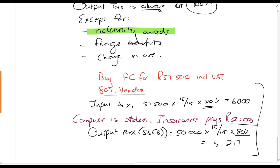So guys, you should have seen that this is a difference. Usually, remember, if we bought this computer and we claimed 80%, but then we sold for 50,000 - this is just an example - if we sold it for 50,000, our output tax would be 50,000 times 15 over 115 times 100%. Because output tax is always at 100%, except for indemnity, fringe, border deficit, and change in use.